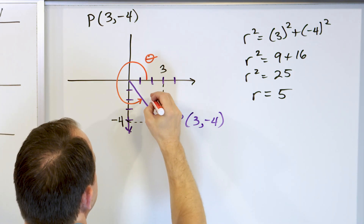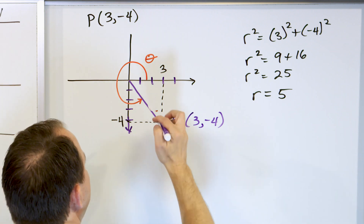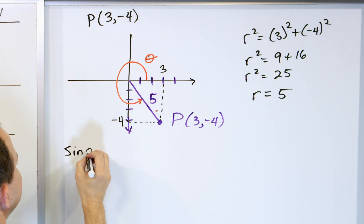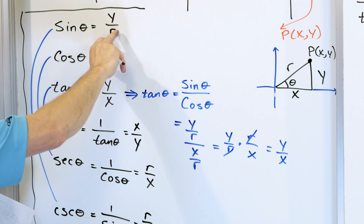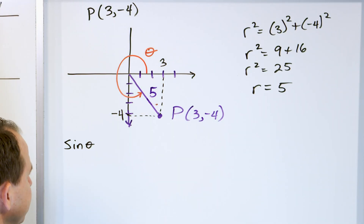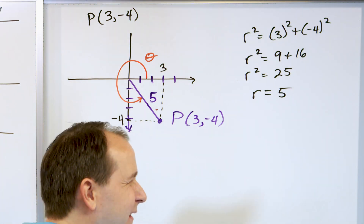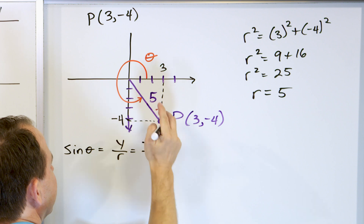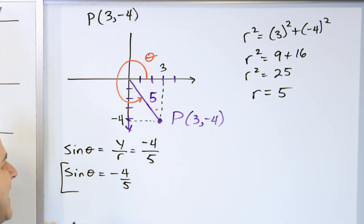R is five units — it's a 3-4-5 right triangle. So how do we find the sine of this angle theta? The sine of any angle is the y-coordinate of point P divided by R, the distance to the origin — the hypotenuse. The Y value of this point is negative four, and the R value is five. So the sine of theta is negative four-fifths. This is the sine of theta, and notice the sine is negative.